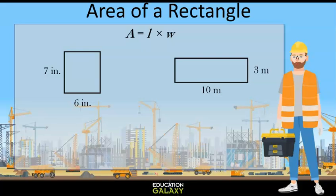The first rectangle has a length of 7 inches and a width of 6 inches. That would make the area 7 times 6 which is 42. So our answer is 42 inches squared.